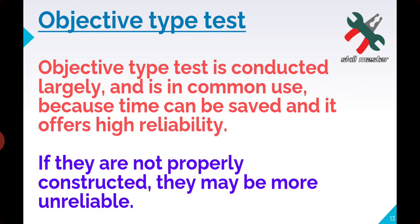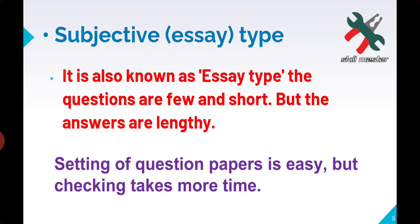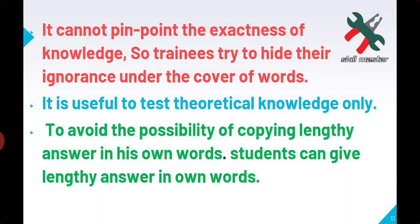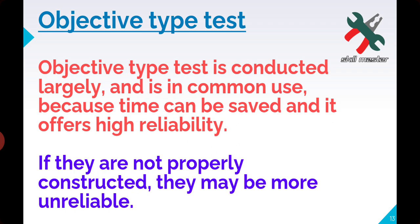Now, subjective type — that is essay type test — was the first. Next is the objective test. Objective test is conducted largely and is in common use because time can be saved and it offers high reliability. Objective tests are used more widely now — they are used in ITS and CITS examinations — because they save time.